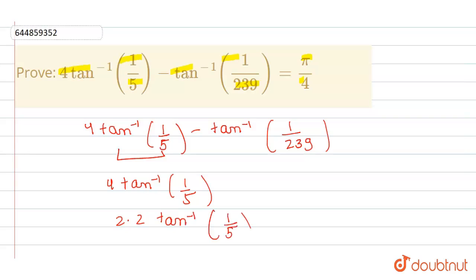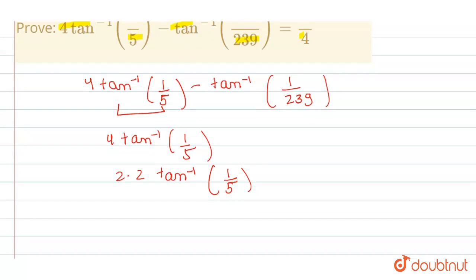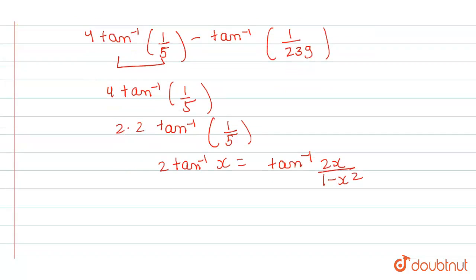Now, we will use formula which is 2tan inverse of x is equal to tan inverse of 2x divided by 1 minus x square. This is our formula of 2tan inverse x. We will use here.